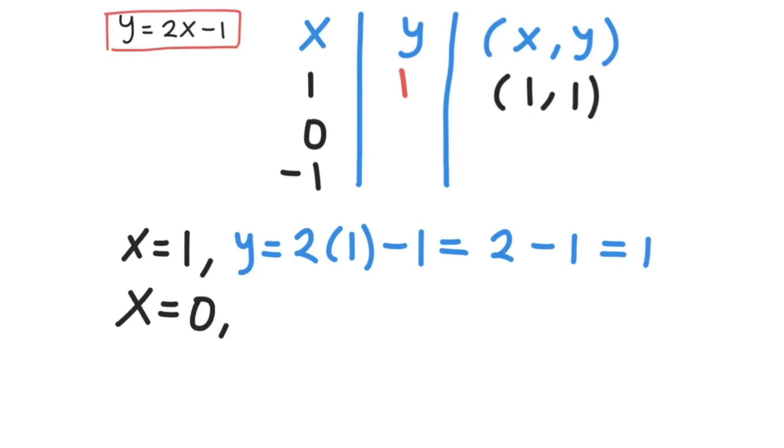Next if we put x equals 0 into the equation, we'll have y equals 2 multiplied by 0 minus 1, which is 0 minus 1, and our y becomes negative 1. So put it in the table and our x comma y is 0 comma negative 1.